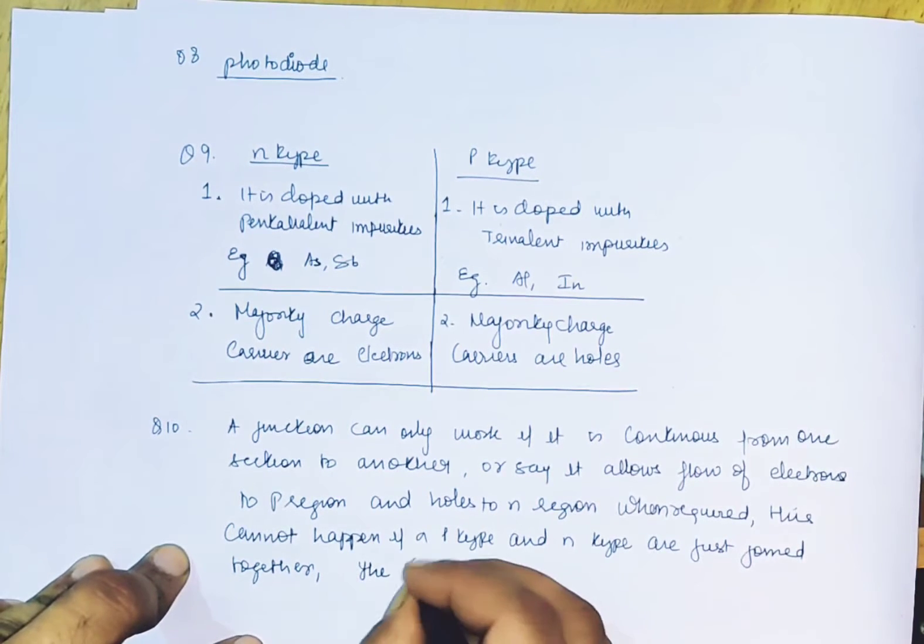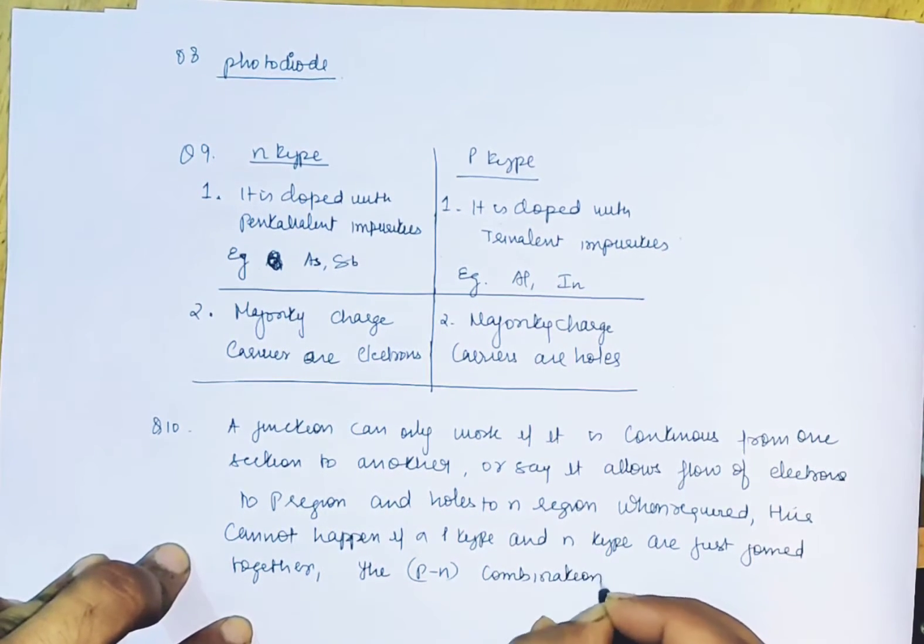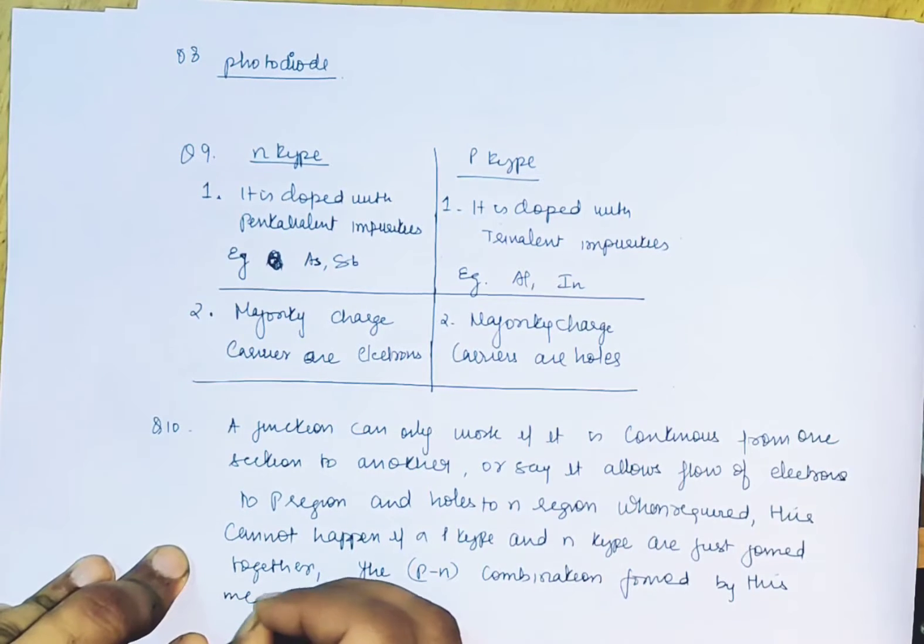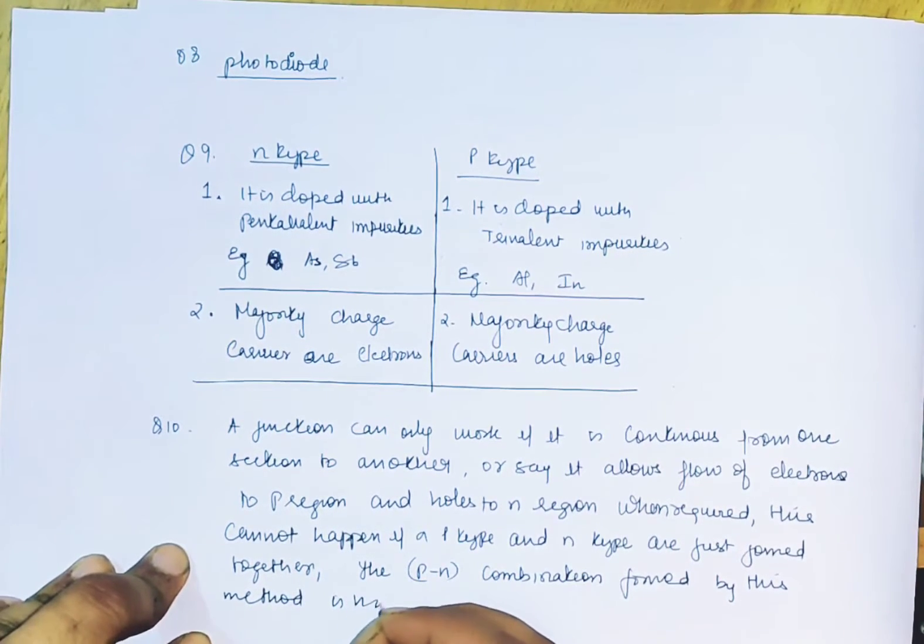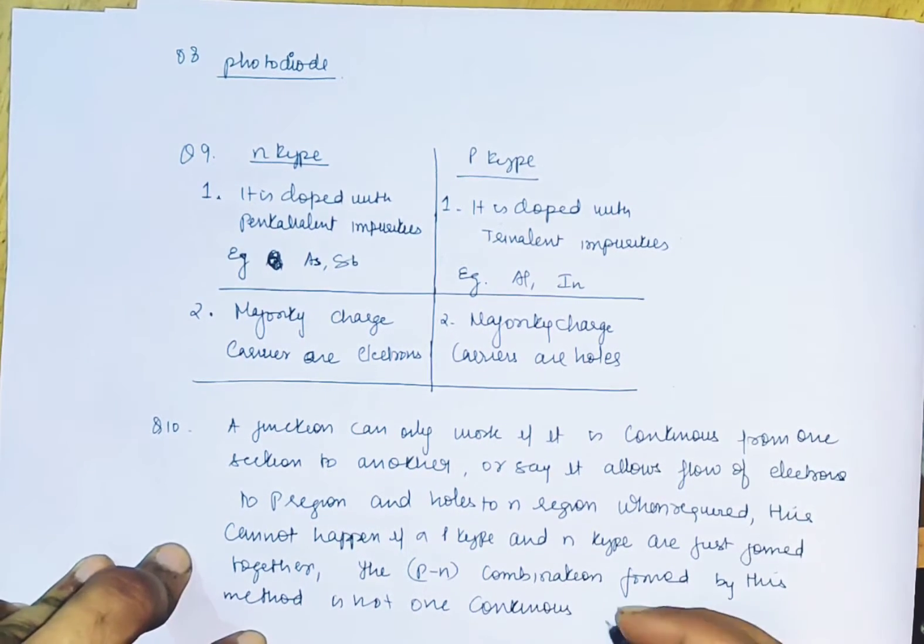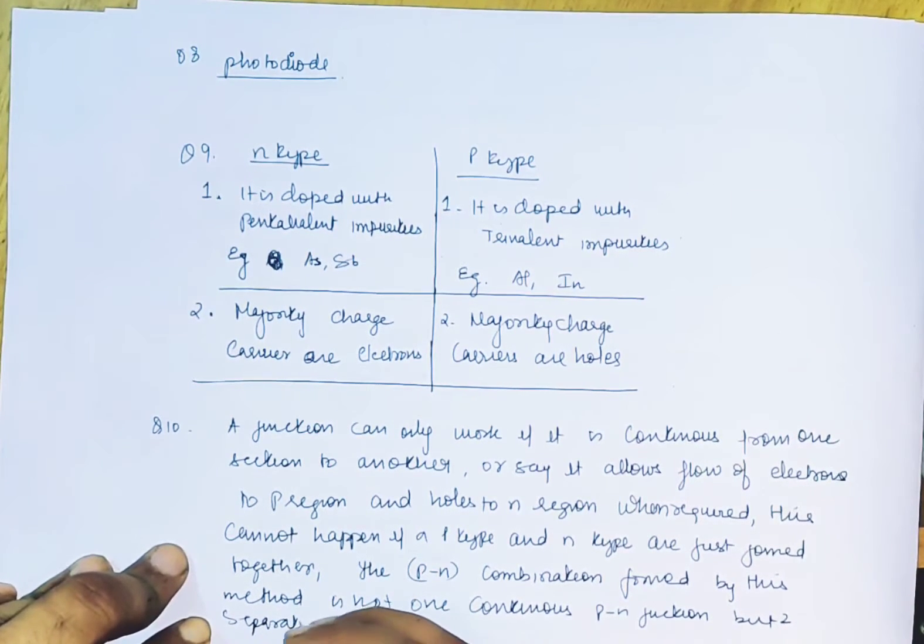The p-n combination formed by this method is not one continuous p-n junction, but two separate individual p and n sections.